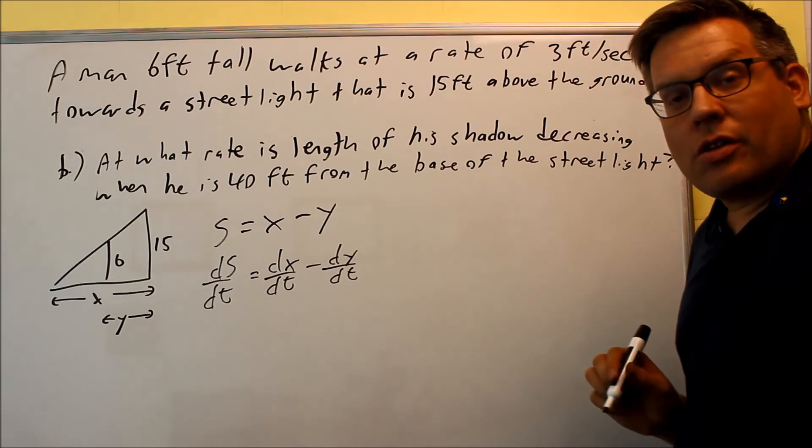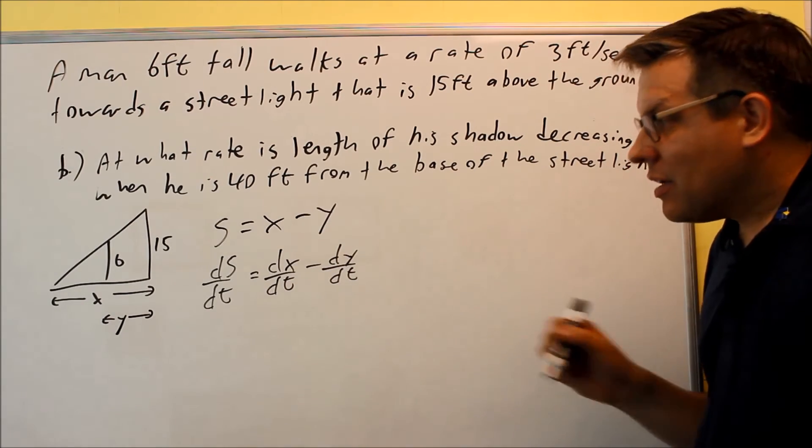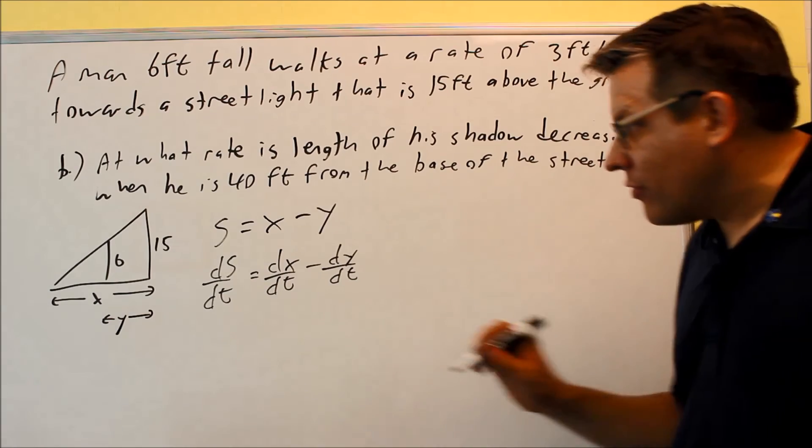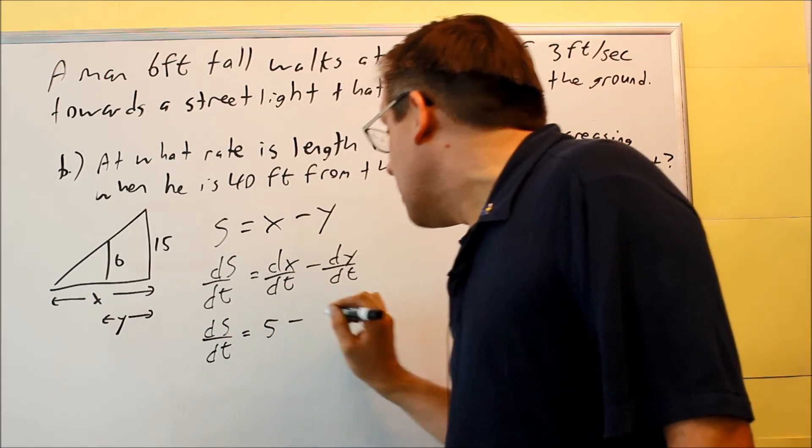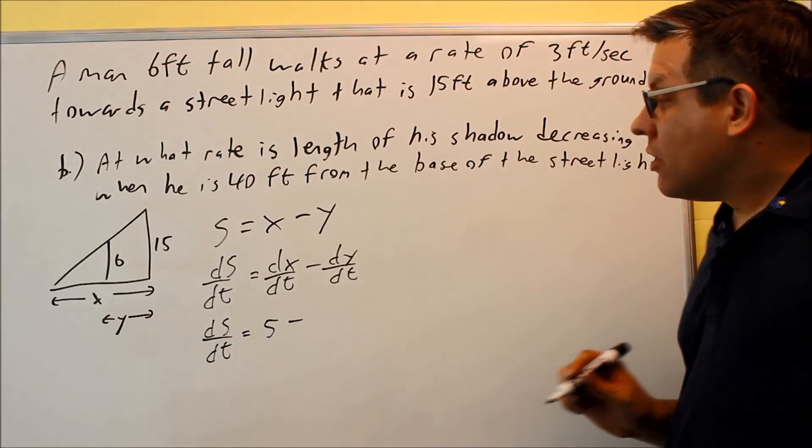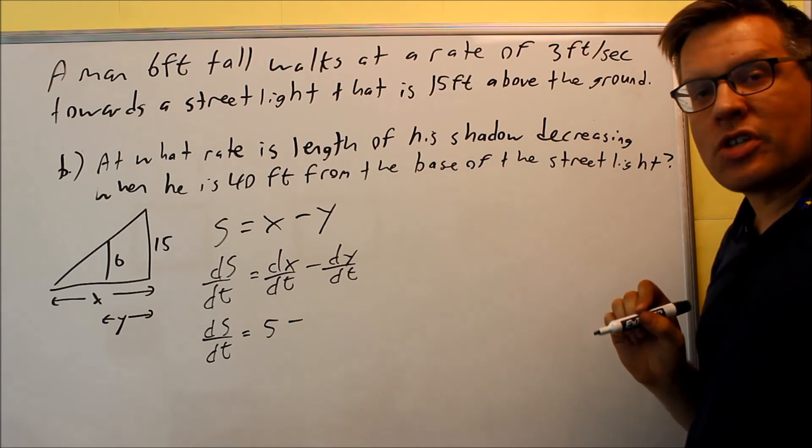Now we're just going to plug in the given information. The dx dt is what we just solved for in part A. That answer was 5, so we're going to put that in. And then minus dy dt. That's the distance he's moving towards the street light. That's 3 feet per second.